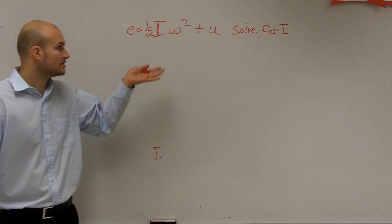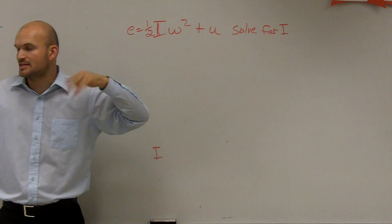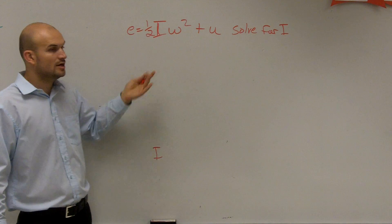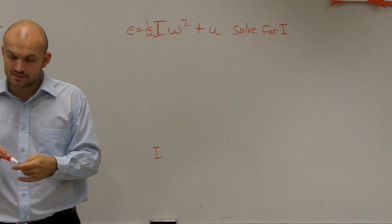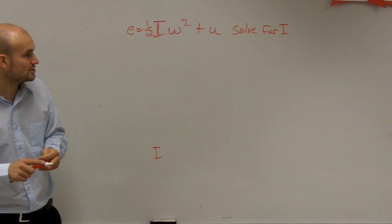So we ask the question, what do we need to undo? What's happening to our variable that's preventing it from being by itself? We need to use the reverse order of operations and inverse operations to solve.